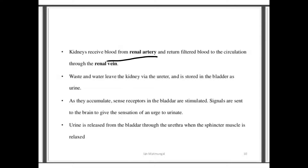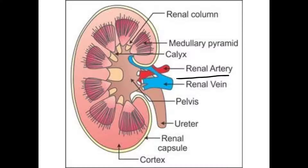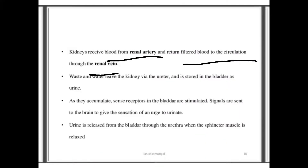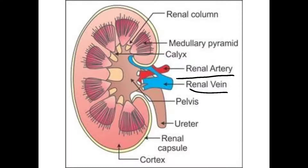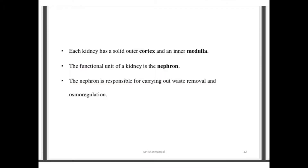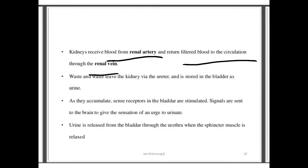The kidneys receive blood from the renal artery and return filtered blood to the circulation through the renal vein. Looking at the diagram, you can see the renal artery and renal vein. The renal artery carries blood to the kidney, and the filtered blood returns from the kidney via the renal vein. The functional unit of the kidney is the nephron.